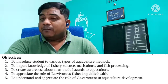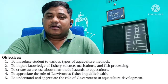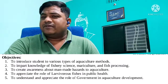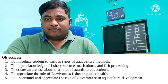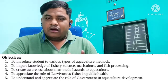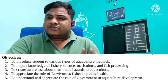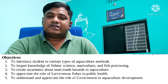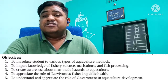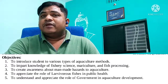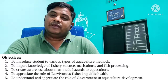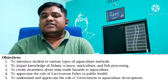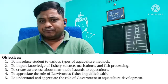The next objective is to appreciate the role of larvivorous fish in public health. Larvivorous fish feed on the larvae of mosquitoes and other insects, thereby reducing the spread of mosquito-borne diseases. This is an important aspect — studying various larvivorous fish and their contribution to public health. The last objective is to understand and appreciate the role of government in aquaculture development, discussing how the government participates in aquaculture in our nation.